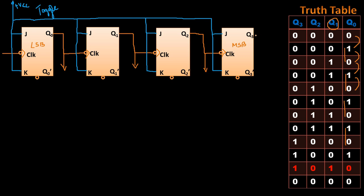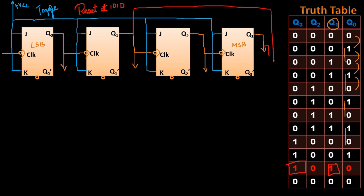The circuit as described so far is a normal mod 16 counter. To make it function as a mod 10 counter we have to reset the counter to 0 as soon as it reaches the 1010 count. Looking at the truth table for the 1010 count, the outputs of Q1 and Q3 are both high. This combination — Q1 and Q3 both being 1 — is unique to the 1010 state; for all preceding combinations, when Q3 is 1 then Q1 is 0, and when Q1 is 1 then Q3 is 0.